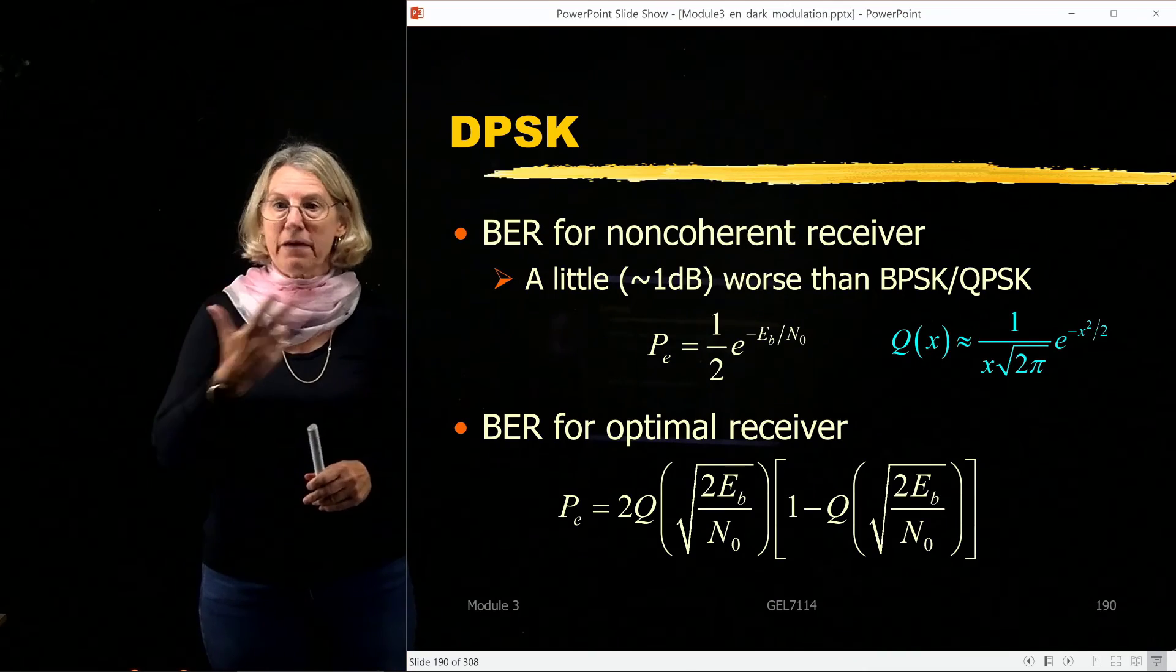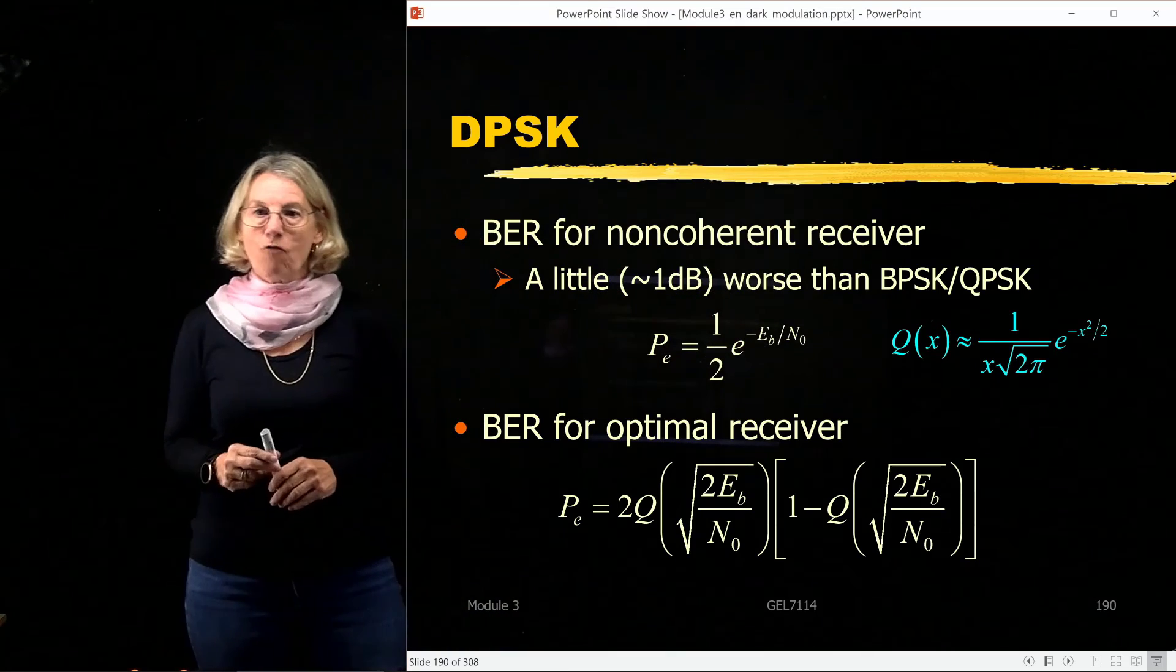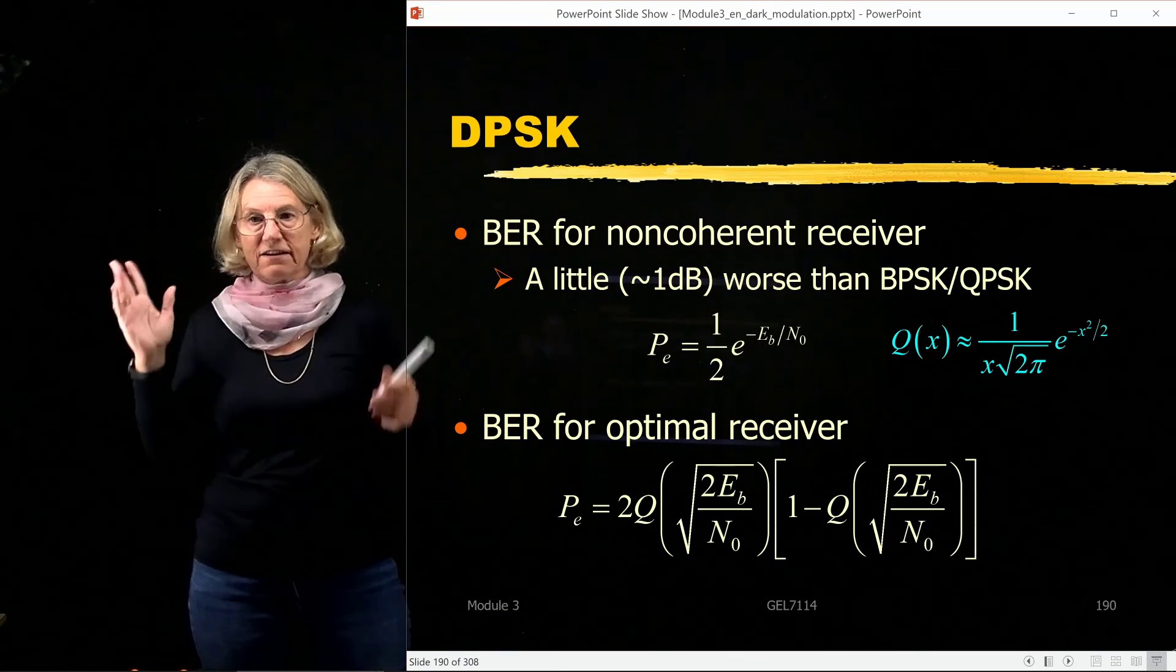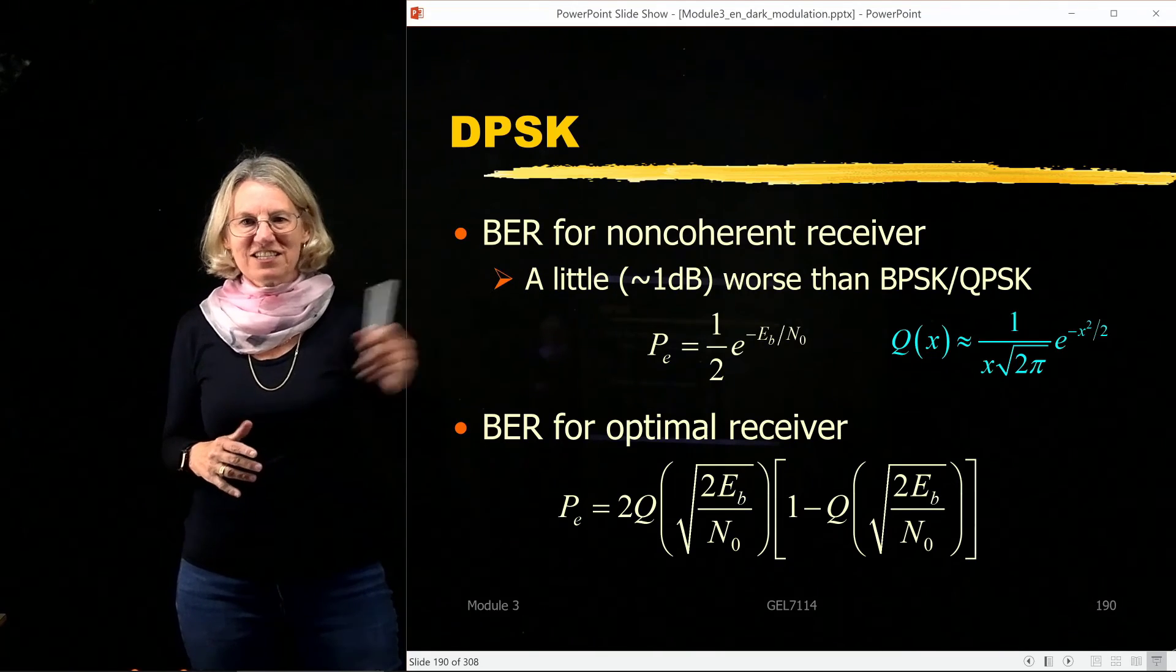The probability of error for DPSK, differential binary phase shift keying, is just one half, and I have an exponential of e to the minus Eb over N0. Super. I don't even need that strange integral, the q function, I just need an exponential.